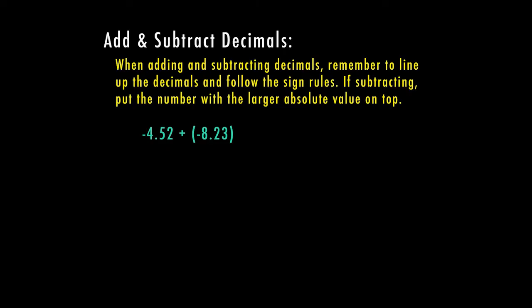Let's go ahead and first we need to line up our decimals. Since we are technically adding these together, I'm going to go ahead and just put an addition sign. And then we'll go back and deal with our sign rules as soon as we're finished adding the numbers. So here we have 2 plus 3 is 5, 5 plus 2 is 7, bring down our decimal, and 4 plus 8 is 12.